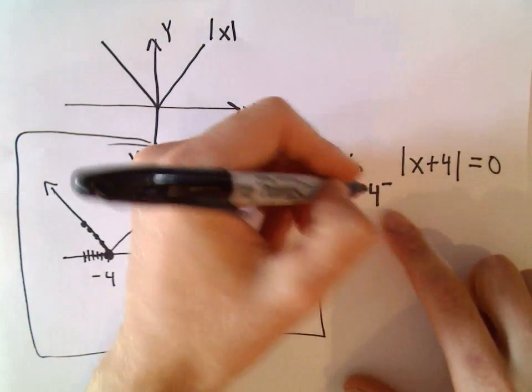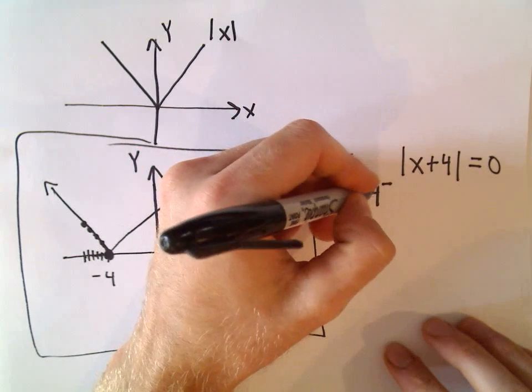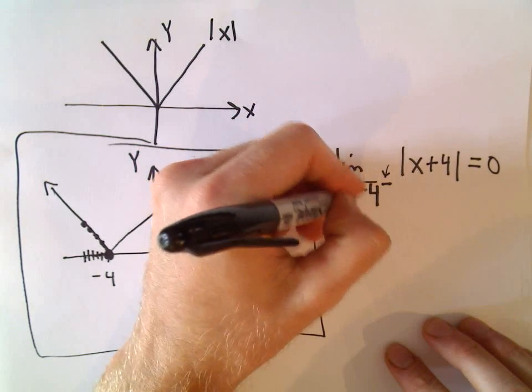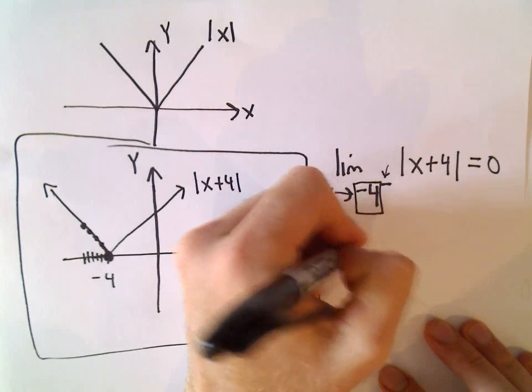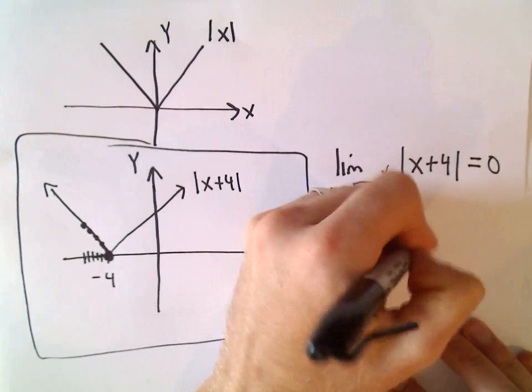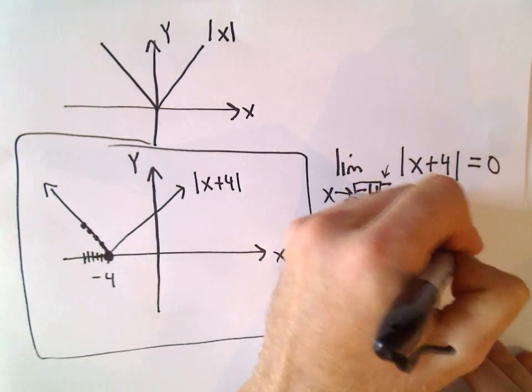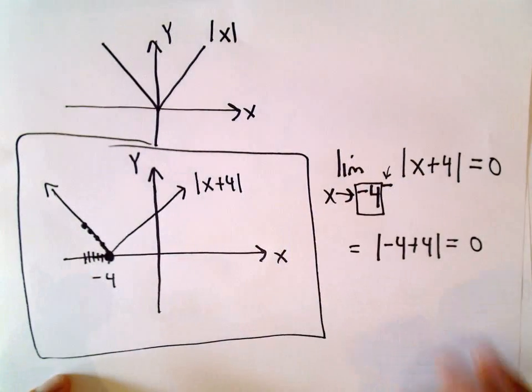And the same thing. You can simply plug negative 4 in. So it's coming from the left, but really you're just plugging in the number negative 4. So if you plug in negative 4, you would get negative 4 plus 4, which is the absolute value of 0, which is 0.